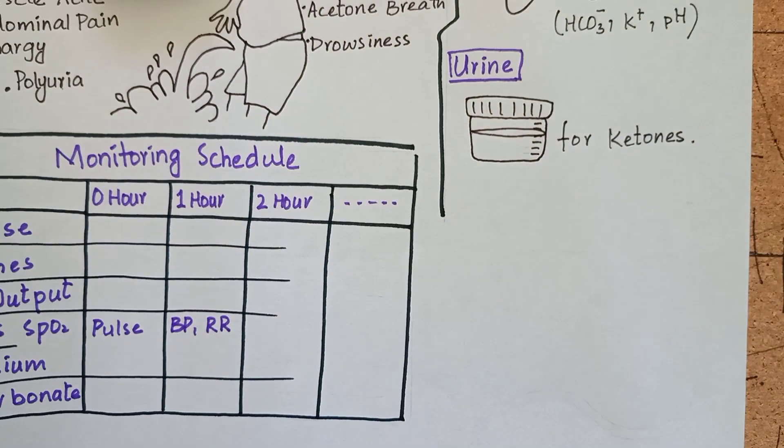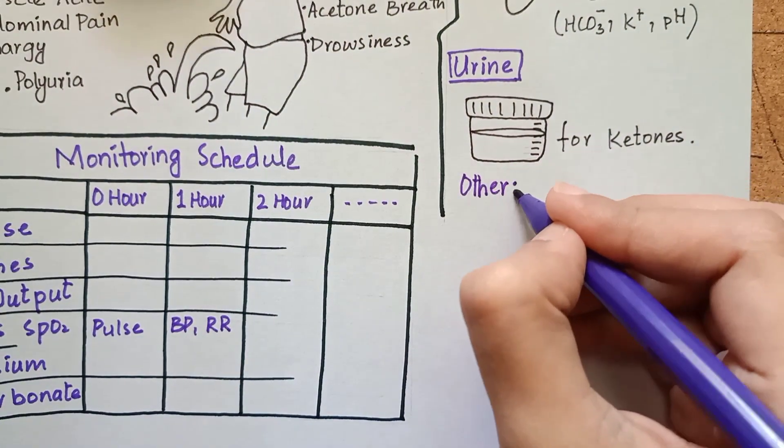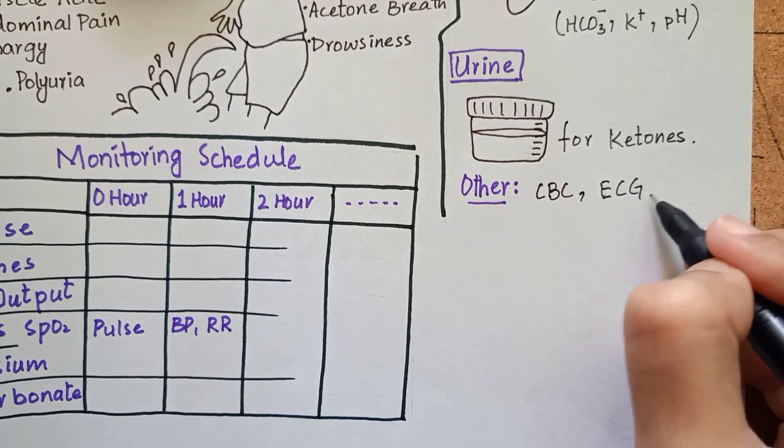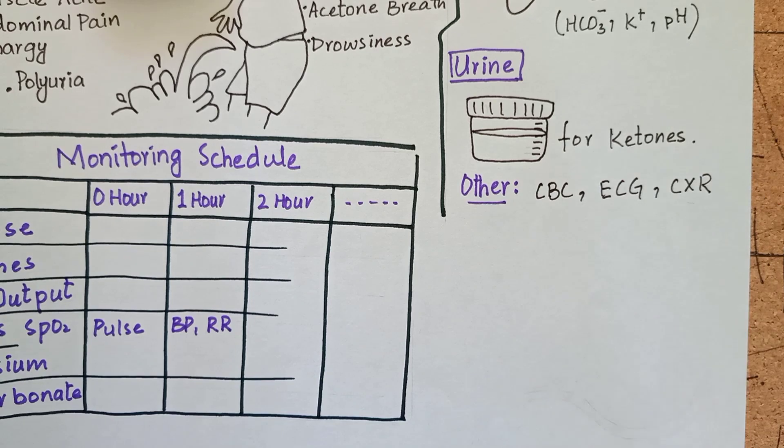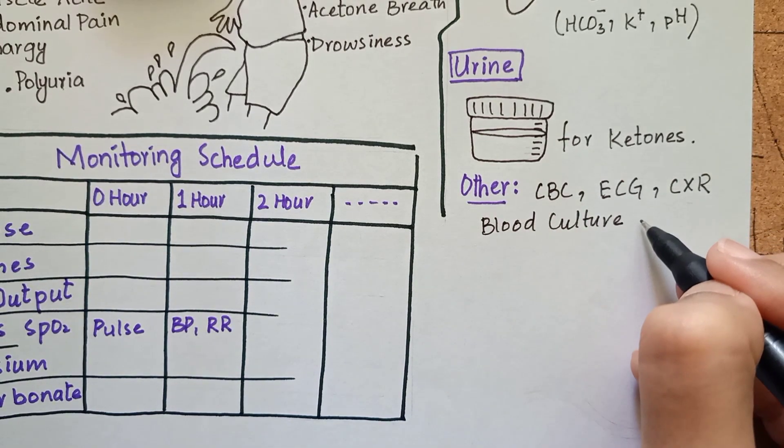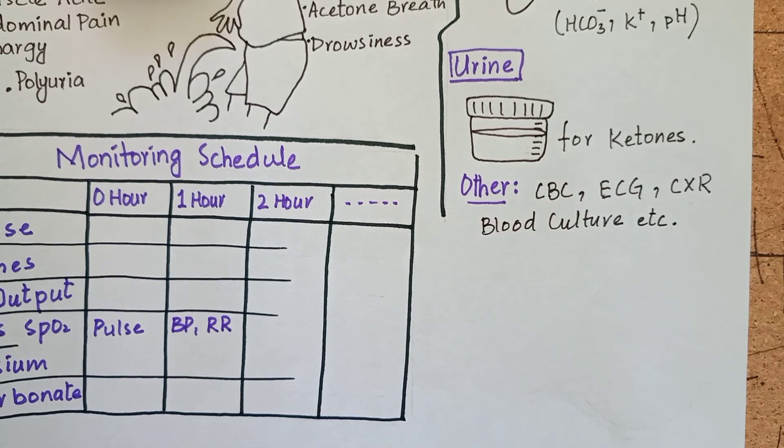Other than that, you will go for some investigations once, complete blood count, ECG, chest x-ray, blood cultures, to treat any precipitating cause and to rule out underlying infection.